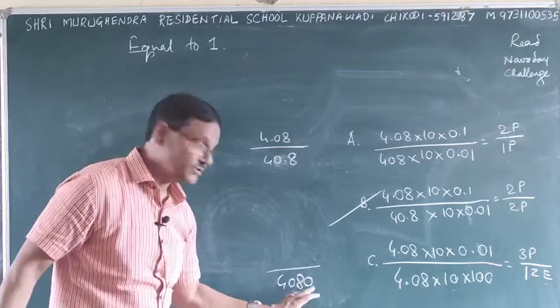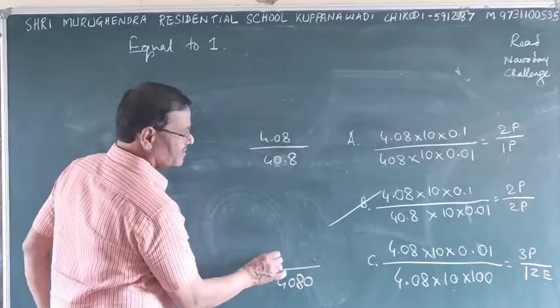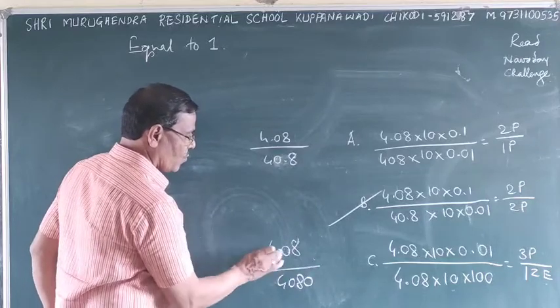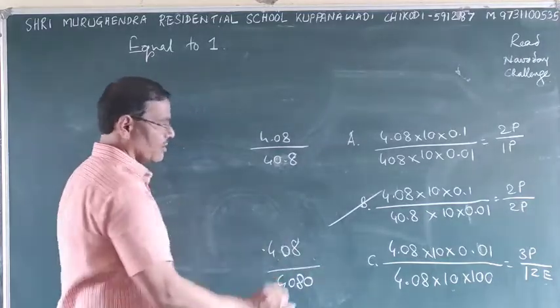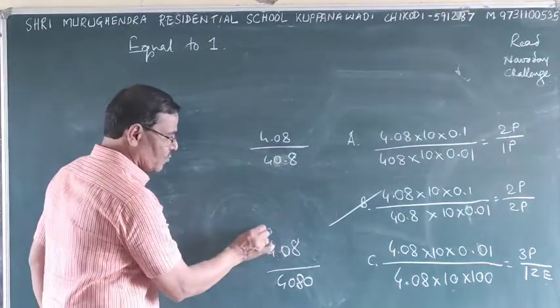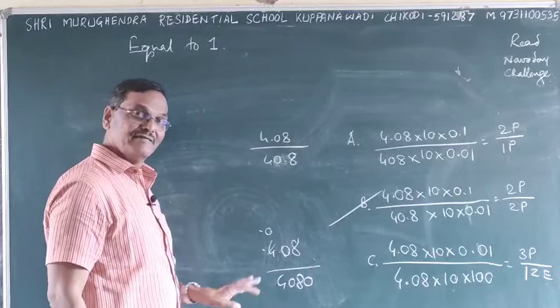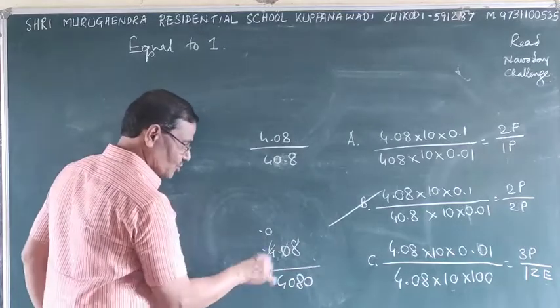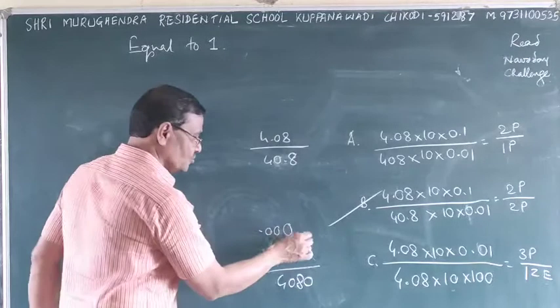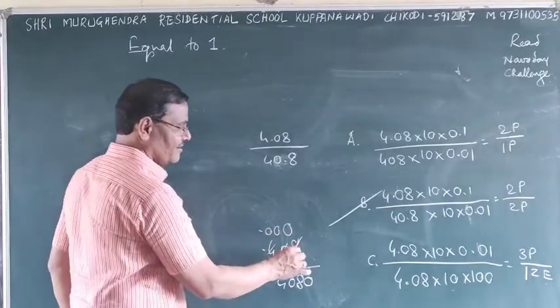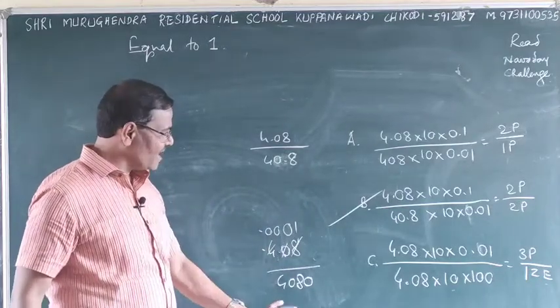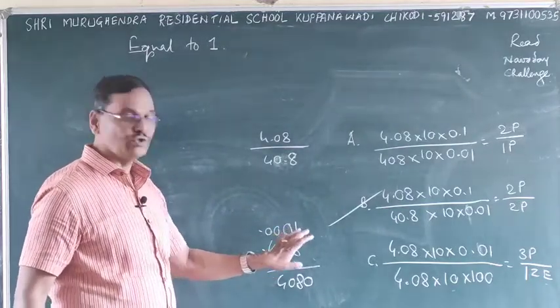And this extra means what? This is 40.8. In front of 408, zero will come. Whereas three plus means here 0.08 will come. Four taken, not divisible; put point zero, zero taken, not divisible; eight taken, not divisible. So what will be the answer? Point 0001.